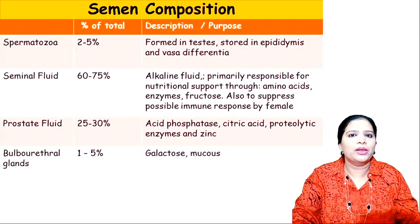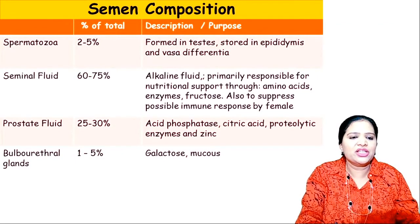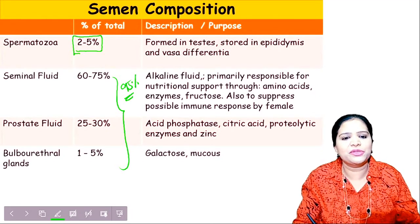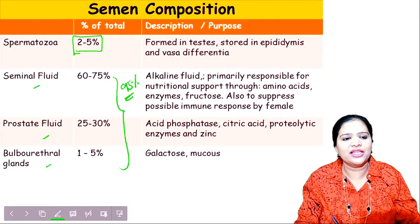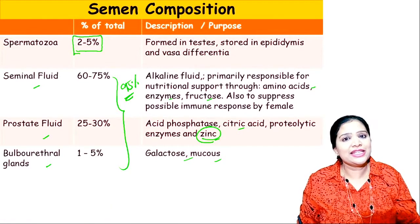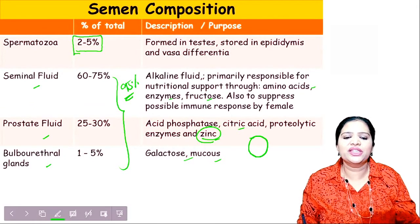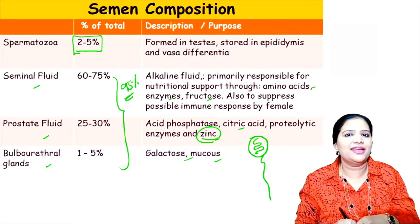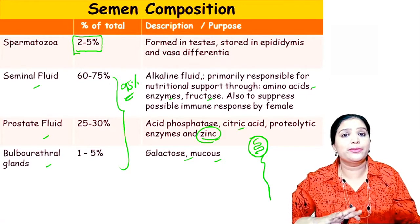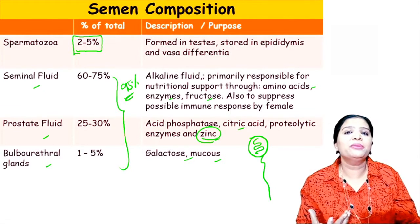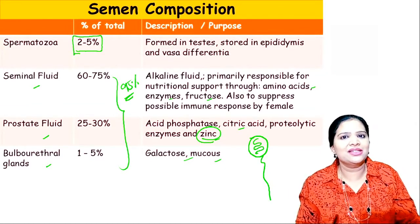The composition of semen: just 5% is sperm; the remaining 95% is the white-colored alkaline substance produced by the seminal vesicle, prostate gland, and bulbourethral gland. Semen contains amino acids, enzymes, fructose, phosphatase, citric acid, zinc, galactose, mucose, and more. Zinc is present to protect the DNA in the sperm head during transport. The sperm needs all these protective and nutritious substances to survive its journey and meet the ovum.